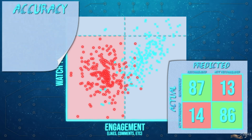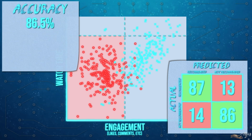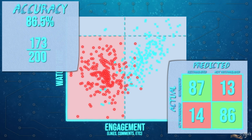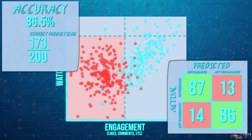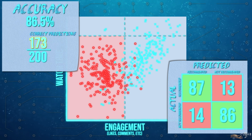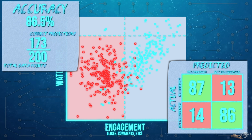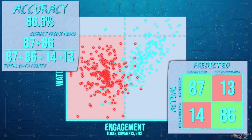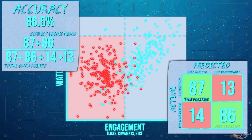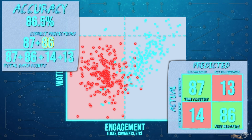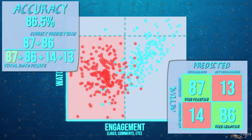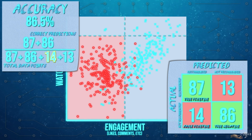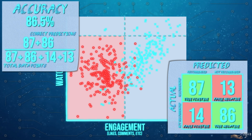This gives our model a predictive accuracy of 86.5%, calculated using the accuracy formula of the total number of correct model guesses — 173 — divided by all the data points — 200. More specifically, the total of the true positives (87) and true negatives (86), divided by the total of all the true positives, true negatives, false positives (14), and false negatives (13).